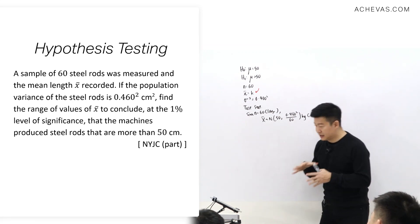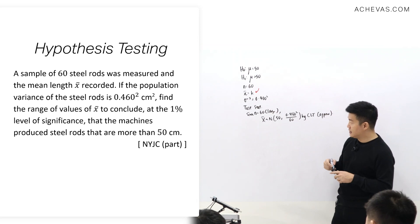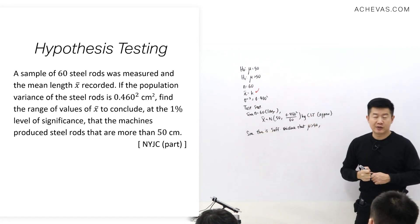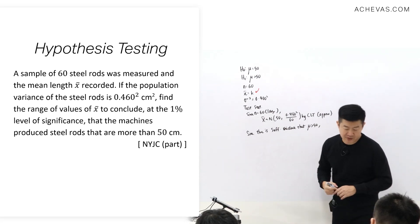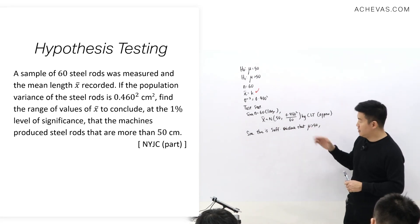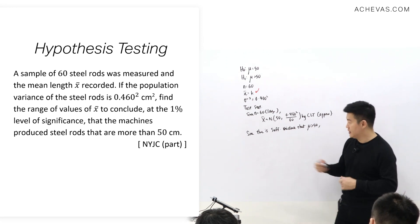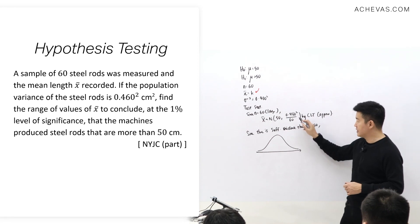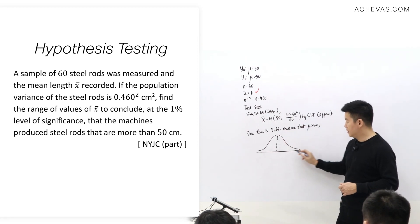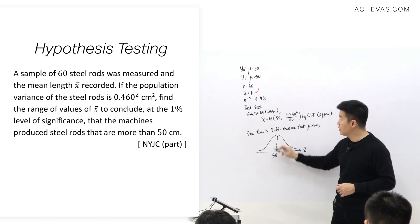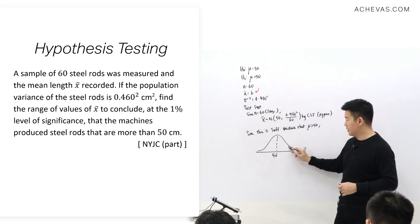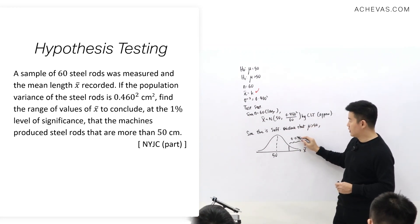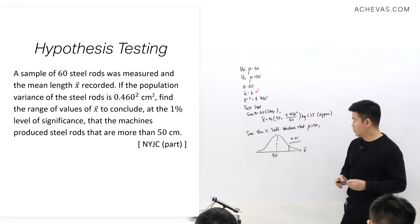But the thing is this question already gives me the conclusion. There's sufficient evidence at 1% level of significance that mu is bigger than 50. Which means if I were to draw my diagram based on the test statistics, this diagram is for X-bar. This is going to be 50. We are looking at the right tail test, and the question is talking about 1% level of significance. So the area here is 0.01.